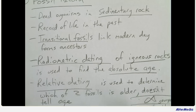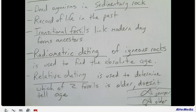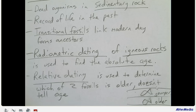Relative dating is used to determine which of two fossils is older. Generally, if you have two fossils and one is lower than the other, the lower fossil is older — because that lower rock layer had to form first before the upper layer formed. However, relative dating doesn't tell you the actual age of the fossils; it just tells you that the lower one is older.